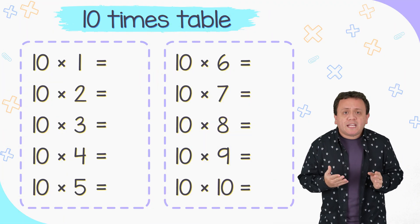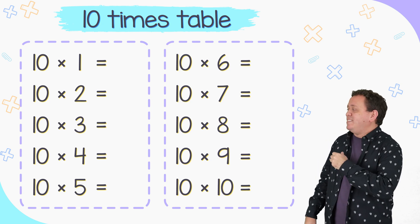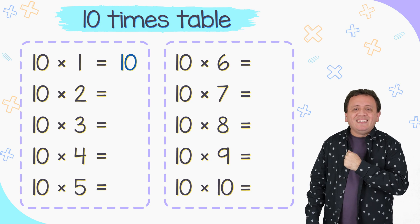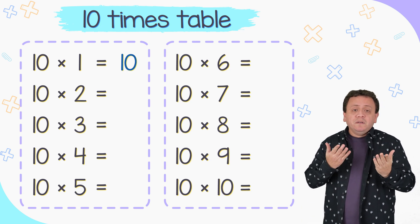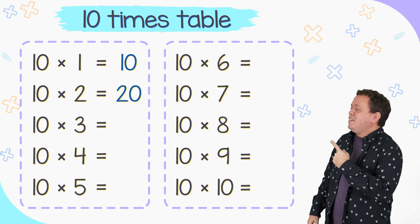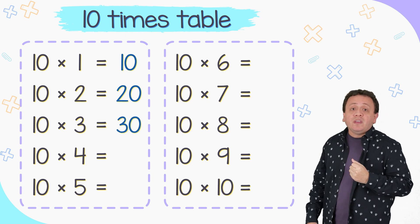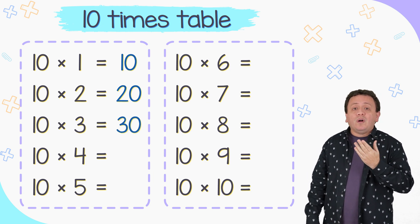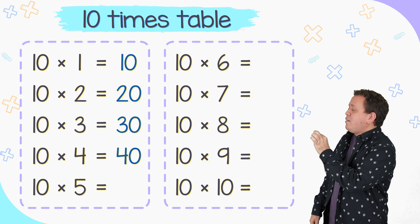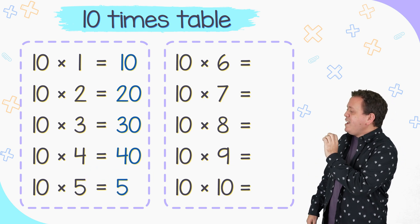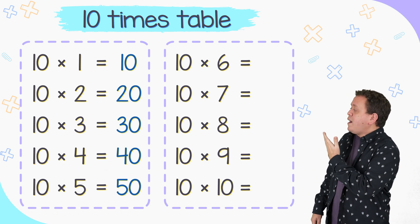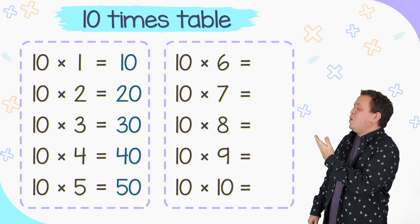Our next multiplication table is a piece of cake: the 10 times table. 10 times 1 equals 10. 10 times 2 equals 20. 10 times 3 equals 30. 10 times 4 equals 40. For 10 times 5, I'm going to write the 5 again and then put a 0 at the end: 10 times 5 equals 50.